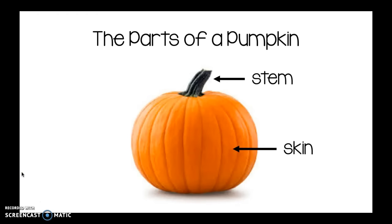Next, a pumpkin has skin, just like an apple, but the skin of a pumpkin is orange usually. Next are the ribs. The ribs are these lines going up and down the pumpkin — they go all the way around.